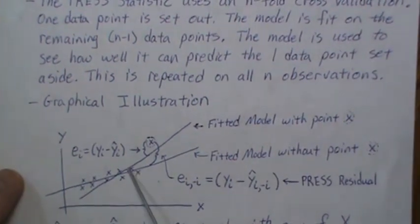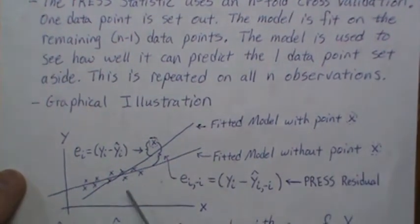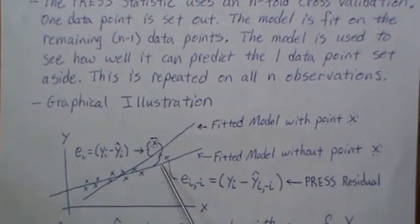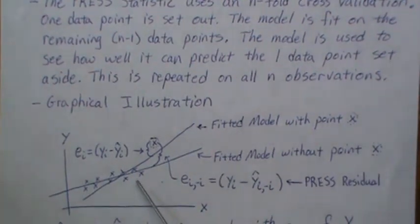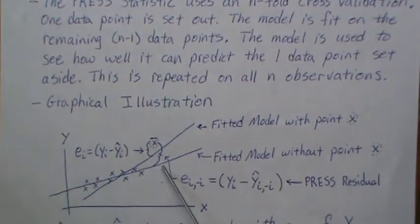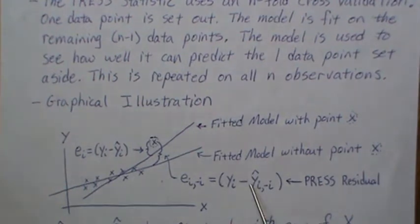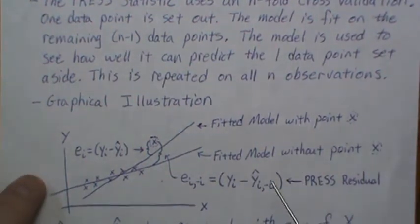This is actually not a bad approach because when we fit the model with the other data points and then use it to predict the held-out point, that model is independent of that data point — since we took a random sample. In a sense, it's trying to replicate what may happen in the real world: once we fit the model and go use it, we're testing it on independent data points. Then you remember this PRESS residual for all n observations and combine them into the PRESS test statistic.